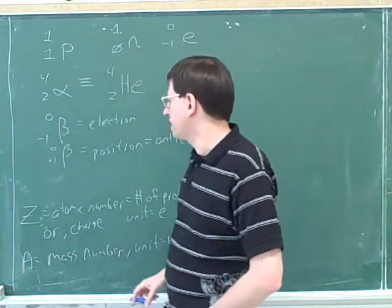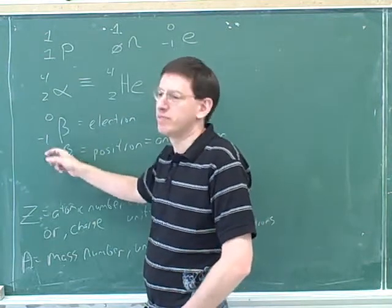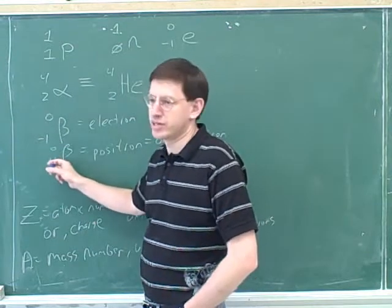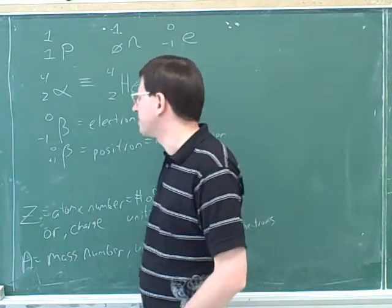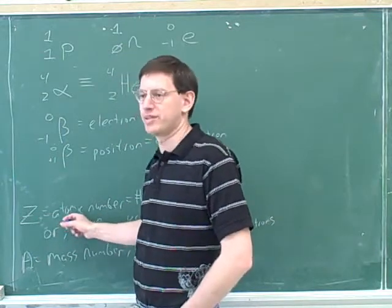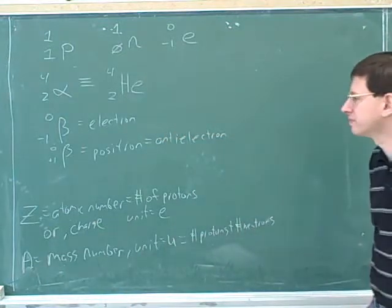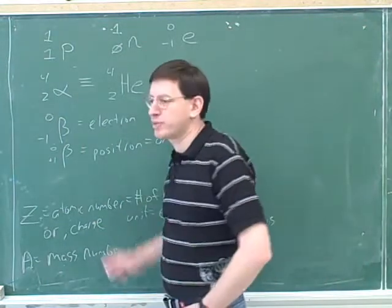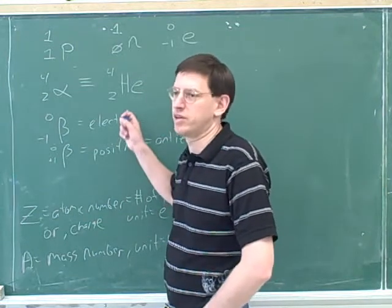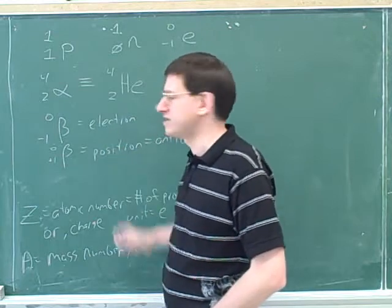It's convenient to use the same symbol for a particle and its antiparticle, just with different numbers — the antiparticle has the same mass number but the opposite charge number. So A is really the mass number and Z is really the charge number, though that's not the official name. There's also an antiproton and an antineutron, but the only antiparticle you're likely to encounter in your course is the antielectron — the positron, a positive electron.